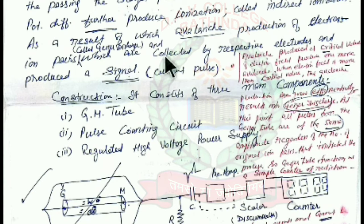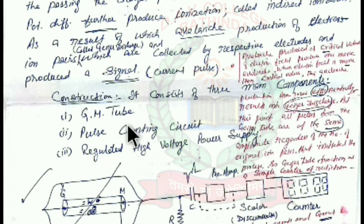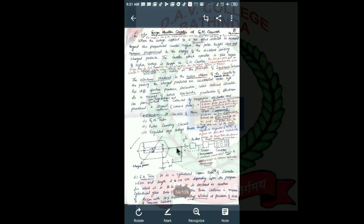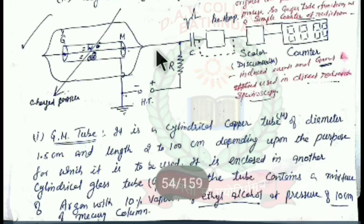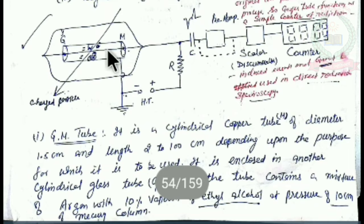These electron-ion pairs are collected by their respective electrodes and produce a signal, that is, a current pulse. The GM counter basically consists of three parts: the GM tube, the pulse counting circuit, and the regulated high-voltage power supply. The GM tube is encapsulated in a glass tube, and internally it contains a central wire which is the anode, and a cathode cylinder.